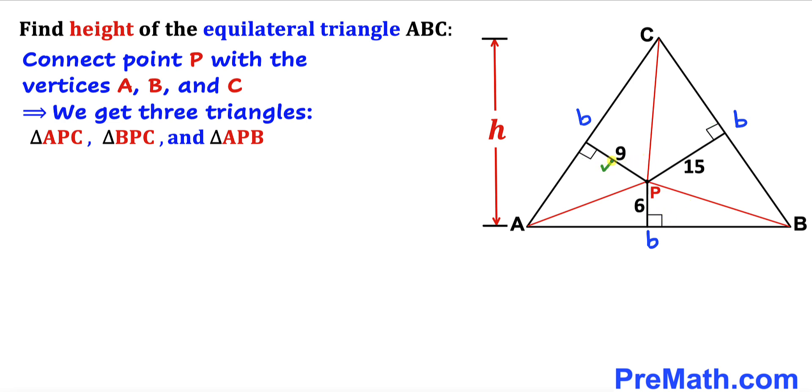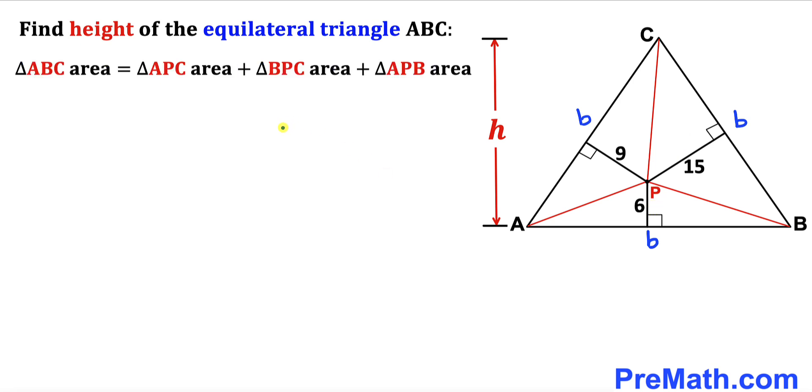So therefore these are going to be the heights of these individual triangles. And now let's go ahead and make an observation. We can see the area of this triangle ABC is equal to the area of this triangle APC plus the area of this another triangle BPC and finally plus this triangle APB.